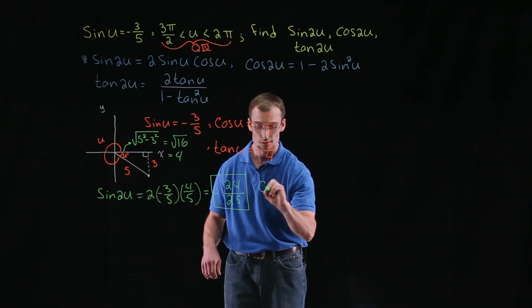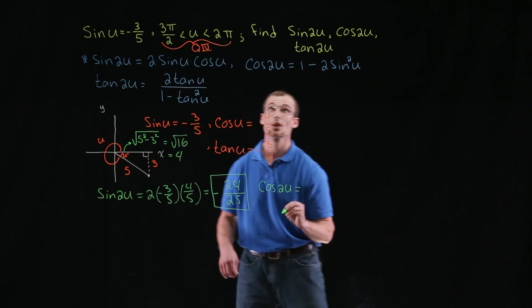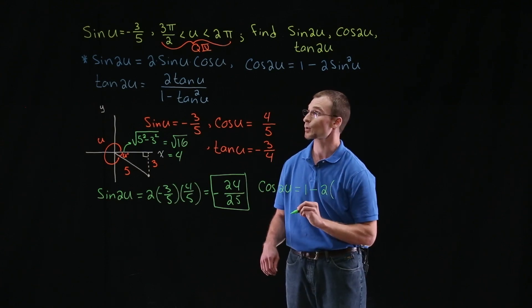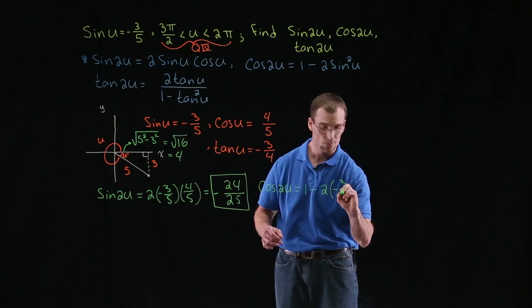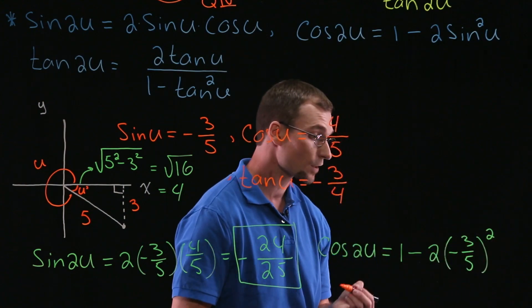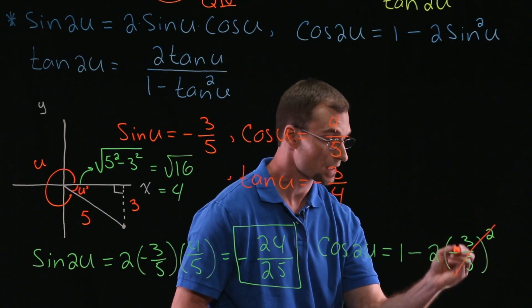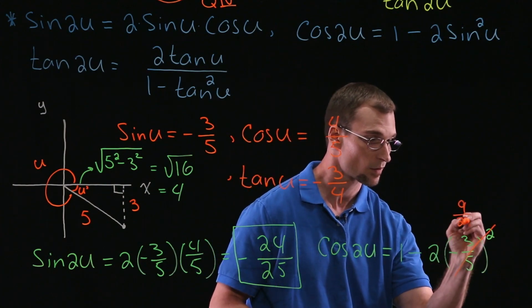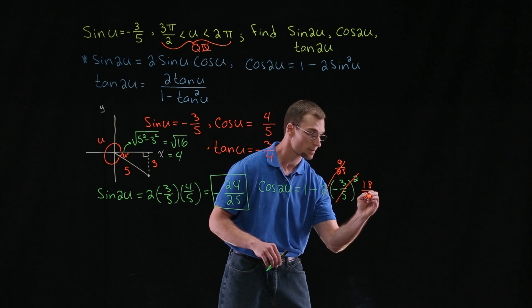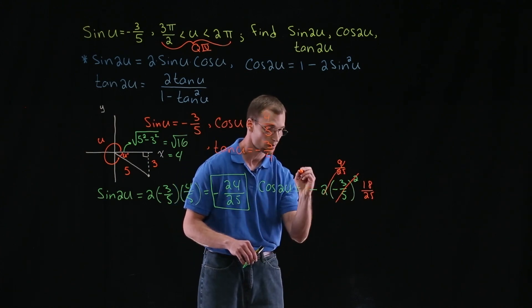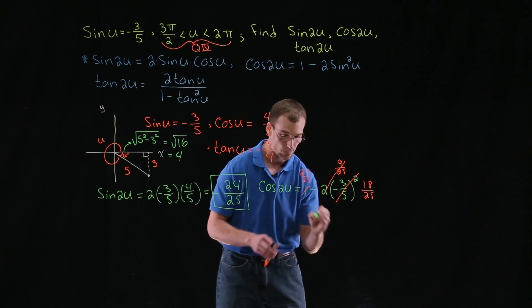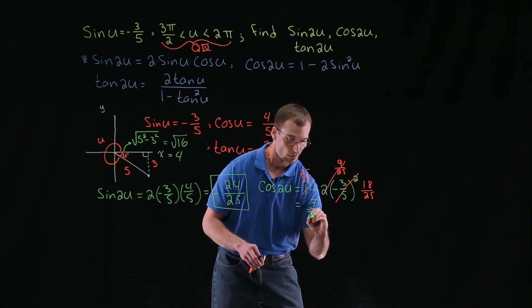Next, let's take a look at cosine two u, which we're taking as one minus two sine squared u. So that's one minus two times negative three-fifths quantity squared. Squaring negative three-fifths: the negative becomes positive, giving us nine over 25. Two times nine over 25 is eighteen over 25. So one minus eighteen over 25, or 25 over 25 minus 18 over 25, is equal to positive seven over 25.